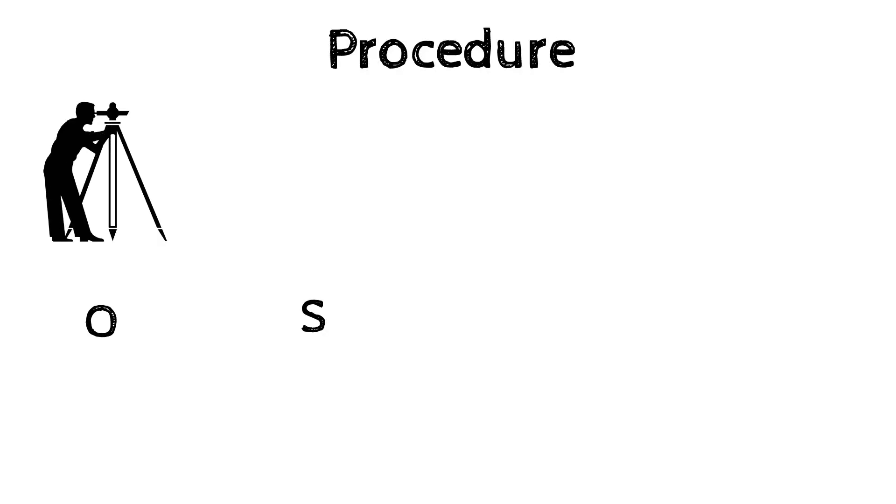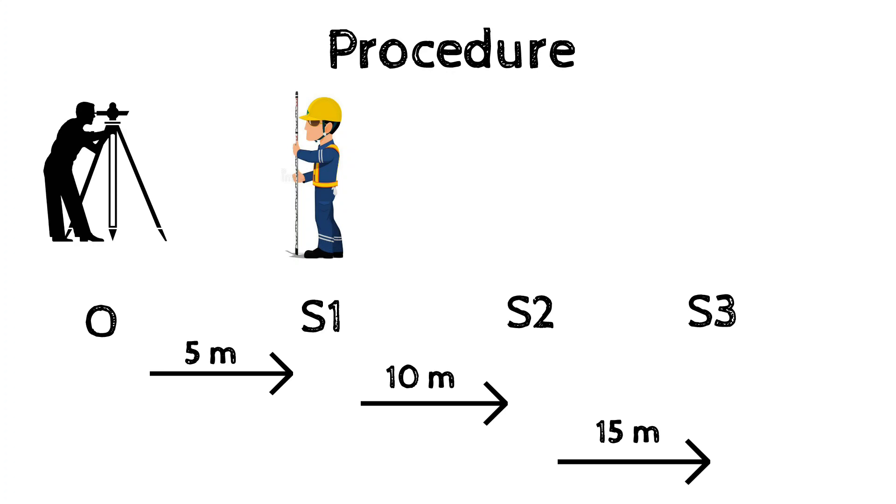Select stations S1, S2, and S3 at intervals of 5 meters, 10 meters, and 15 meters from instrument station O. Then hold the staff at stations S1, S2, and S3 and take readings on it. While taking readings, take care.